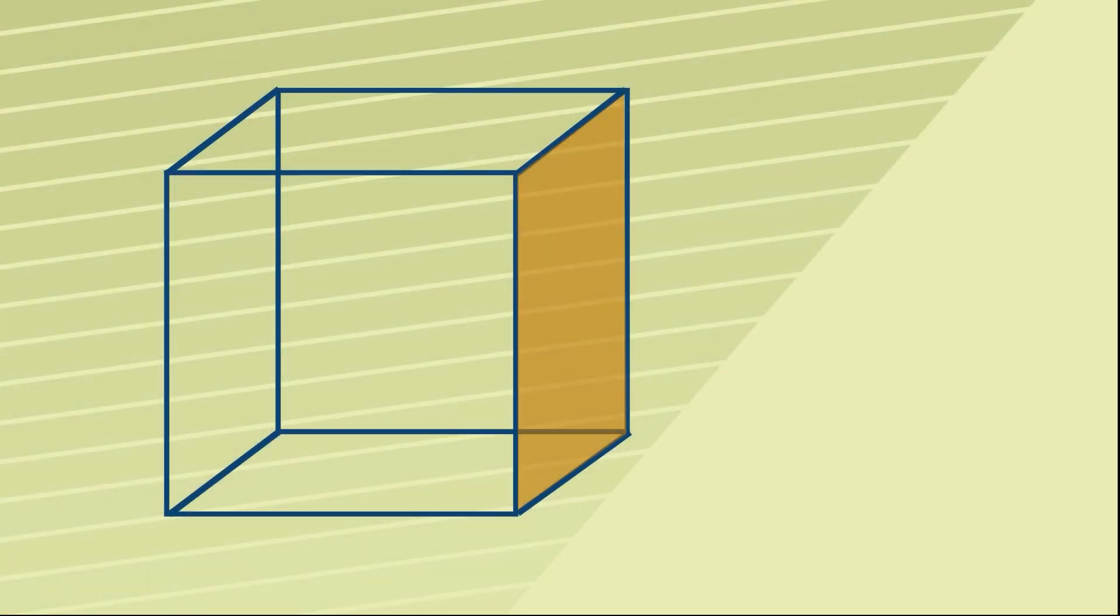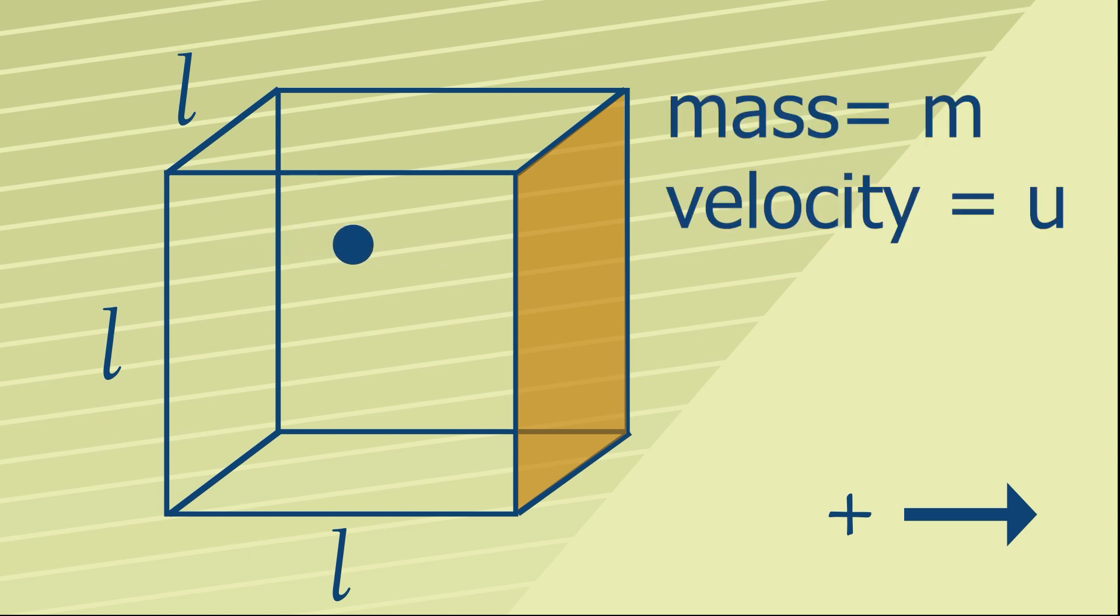We start by imagining a perfect cube where all the sides are of length L, and what we're going to do is take one of those particles and allow it to only move in the x direction at a constant speed.